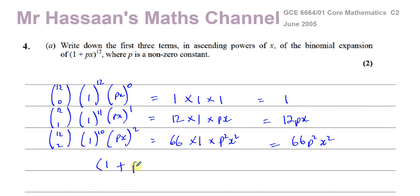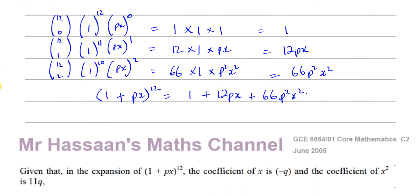The first three terms in ascending powers of X, 1 plus 12 Px, and plus 66 P squared X squared. So that's the answer to part 1 of this question, or part A of this question. Now we're going to do part B.